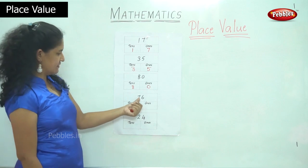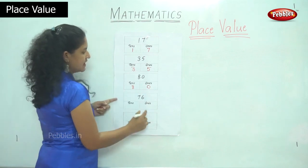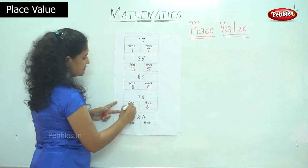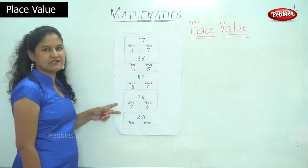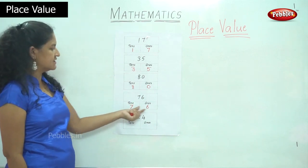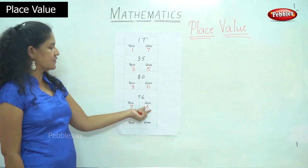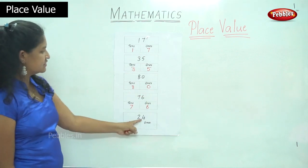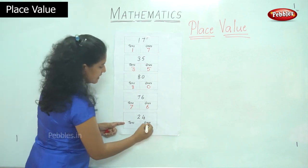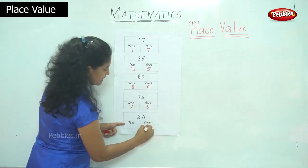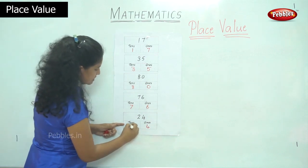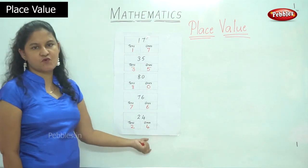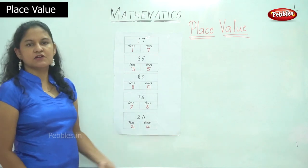The next number is 76. I have number 6 in the 1s place and number 7 in the 10s place. So it is read as 7 10s and 6 1s, or 76. And the last number is 24. I have number 4 in the 1s place and number 2 in the 10s place. And it is read as 2 10s, 4 1s, or 24.